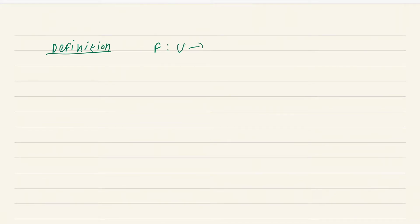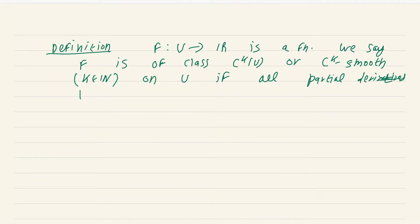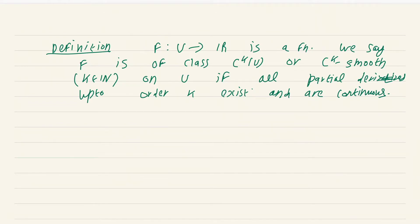Again, f from U to R is a function. We say f is of class C^k(U), or C^k smooth, where k is a natural number, if all partial derivatives up to order k exist and are continuous. Not only do you require the derivatives to exist, the derivatives must be continuous — that is important.